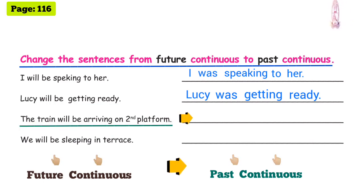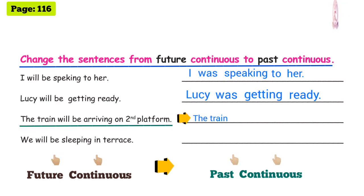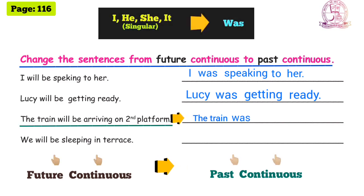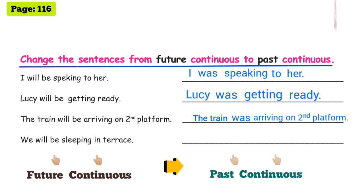Next sentence: 'The train will be arriving on second platform.' Subject: 'the train' — singular. For singular subjects like he, she, it, we use 'was'. So past continuous: 'The train was arriving on second platform.'